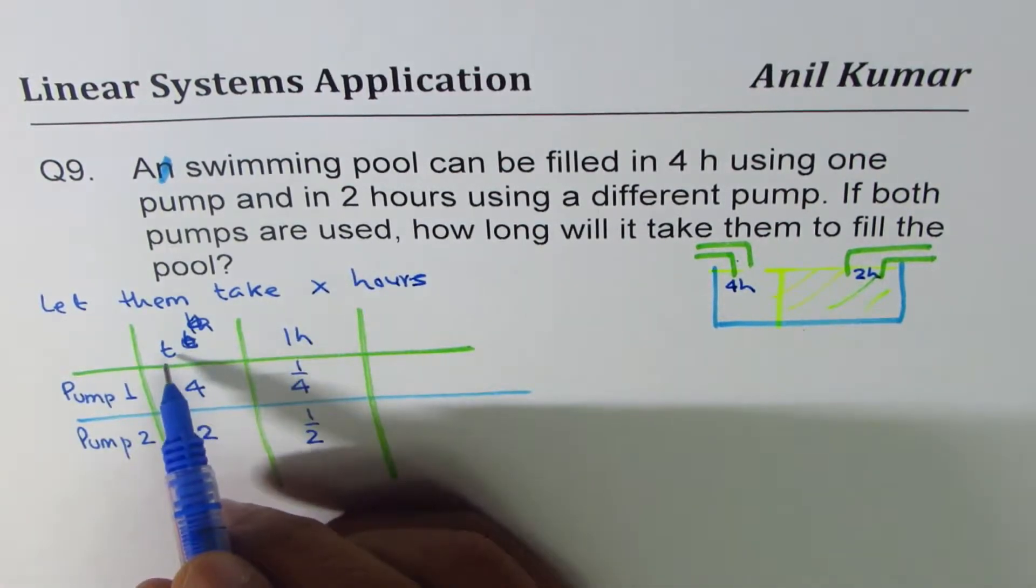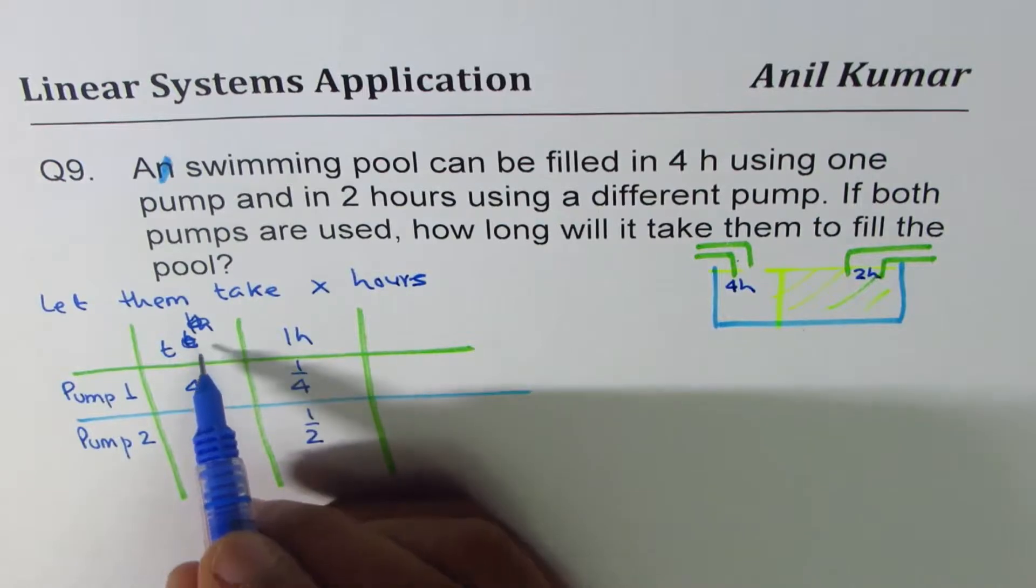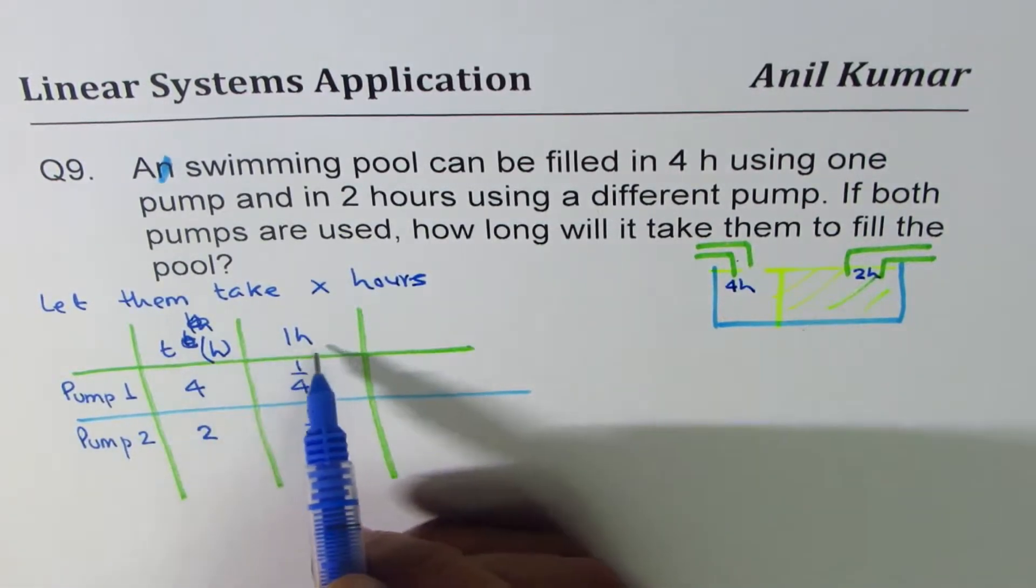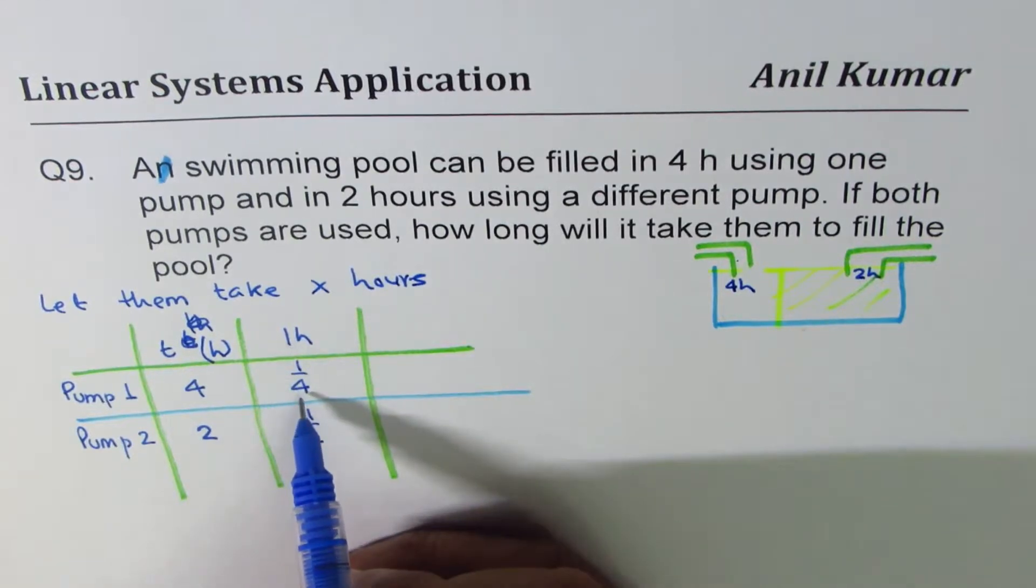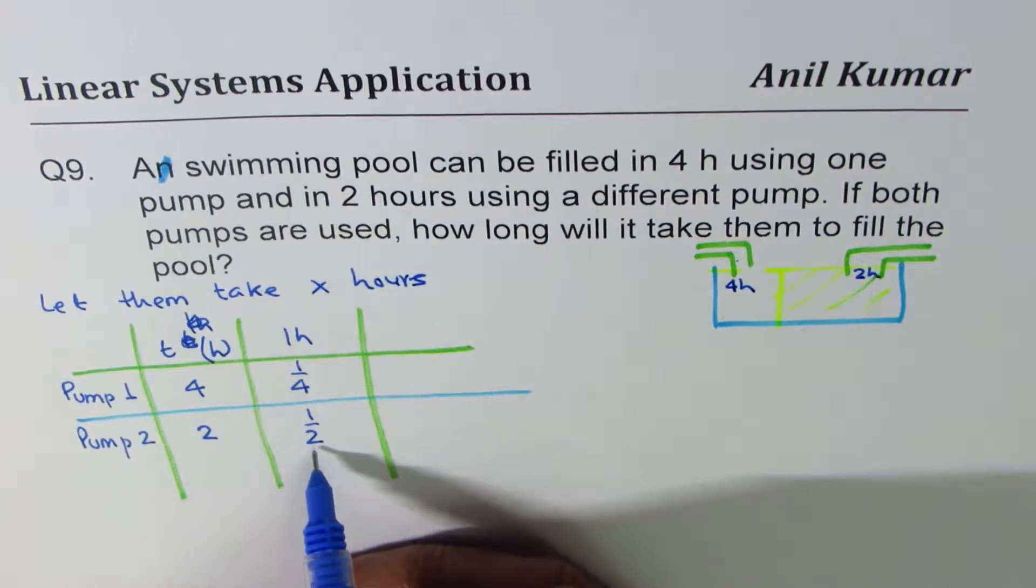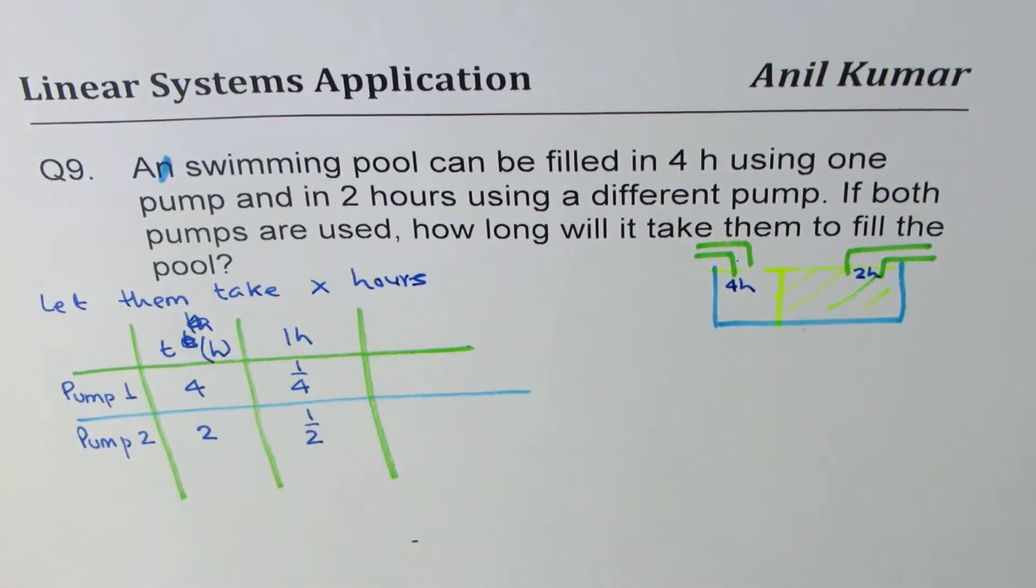So total time to fill is four hours. Let's call them in hours, right? But in one hour, one fourth can be filled by the first pump and half can be filled by the second pump. Do you understand that part?